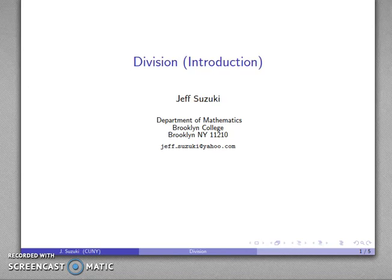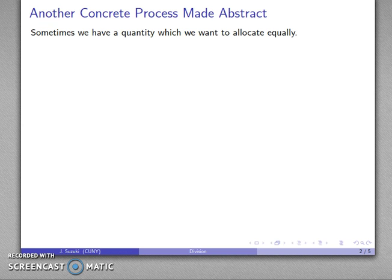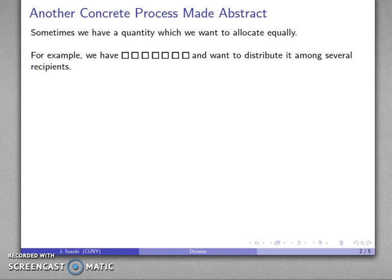The last of the elementary arithmetic operations is division, and in many ways this is the most complicated — not for any particular reason other than we actually combine two very different ideas when we talk about division. Mathematics begins when we take some sort of concrete process and make an abstraction of it. In this case, the process is: sometimes we have a quantity and we want to allocate it to a group of people equally, and there are actually two different ways of doing this.